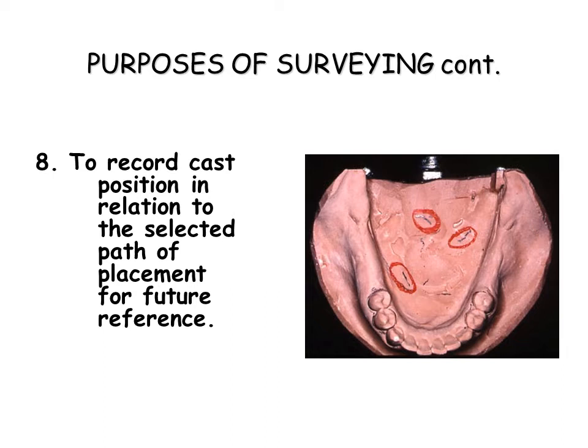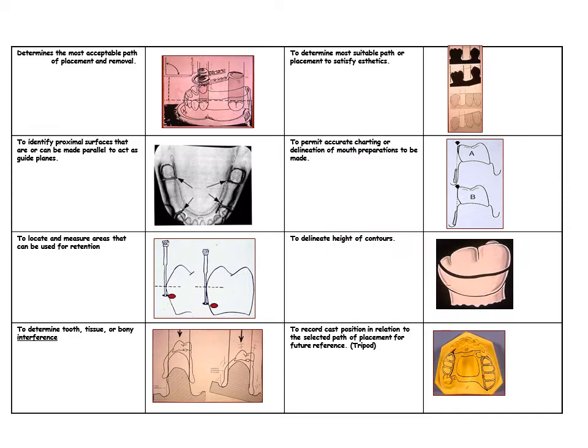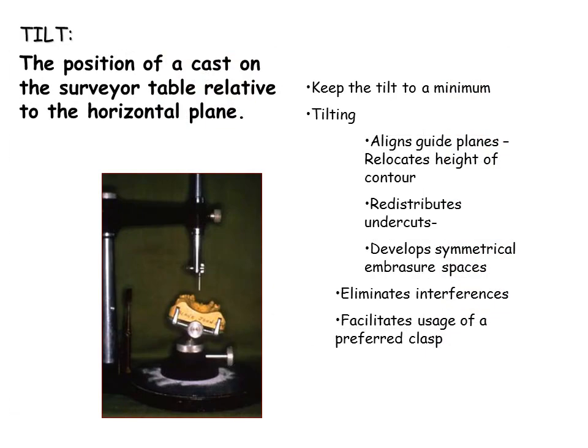20. This may be done by locating three dots or parallel lines on the cast, thus establishing the horizontal plane in relation to the vertical arm of the surveyor. Tilt is the position of a cast on the surveyor table relative to the horizontal plane. 21. Tilting is used to align guide planes, relocates height of contour, redistributes undercuts, develops symmetrical embrasure spaces, eliminates interferences, and facilitates usage of a preferred clasp.